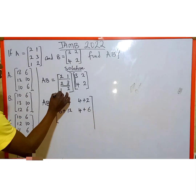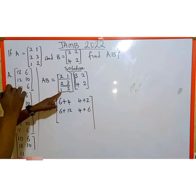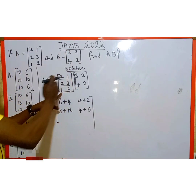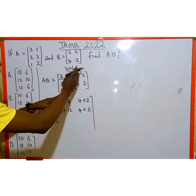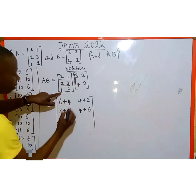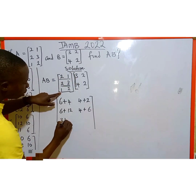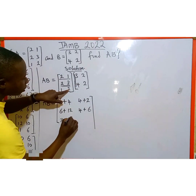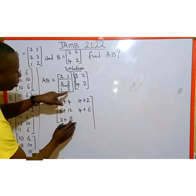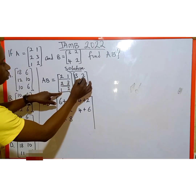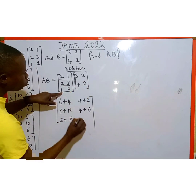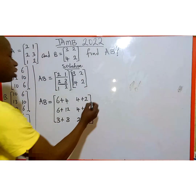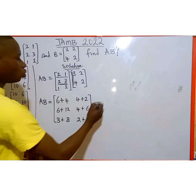Coming down to the third row, we use it to multiply by the first column of matrix B. So 1 multiplied by 3 gives 3, then plus 2 multiplied by 4 gives 8. Then the next element: 1 multiplied by 2 gives 2, plus 2 multiplied by 2 gives 4. Now we are going to add them all together.